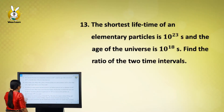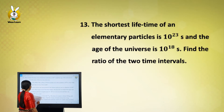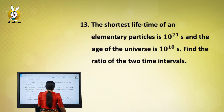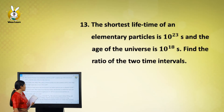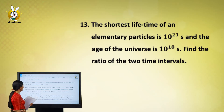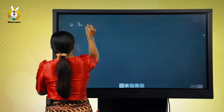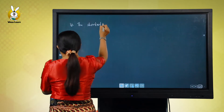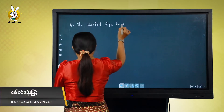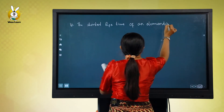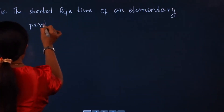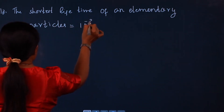Number two: the lifetime of an elementary particle. The age of the universe is on the order of 10 to the power of minus 23 seconds — this is the lifetime of an elementary particle.